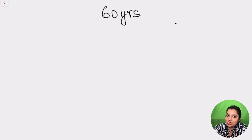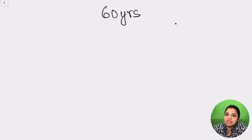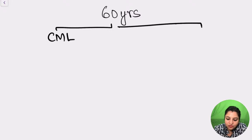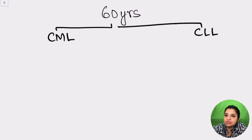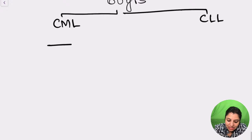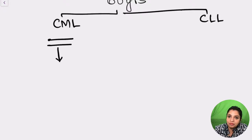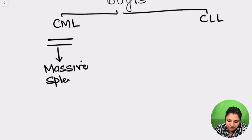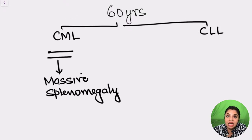As I told you in the last video, we have two types of chronic leukemias: chronic myeloid leukemia (CML) and chronic lymphoid leukemia (CLL). Myeloid cells go for maturation to the spleen, so CML patients present with massive splenomegaly. Once your examiner says a 60-year-old male with massive splenomegaly, immediately start thinking of CML.